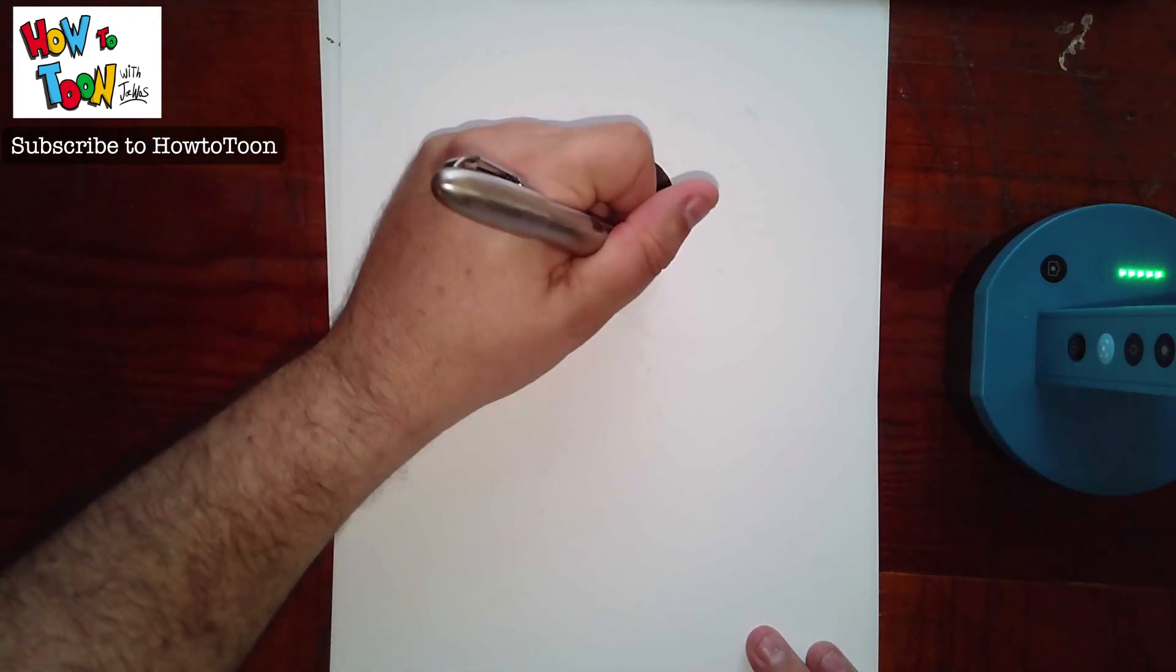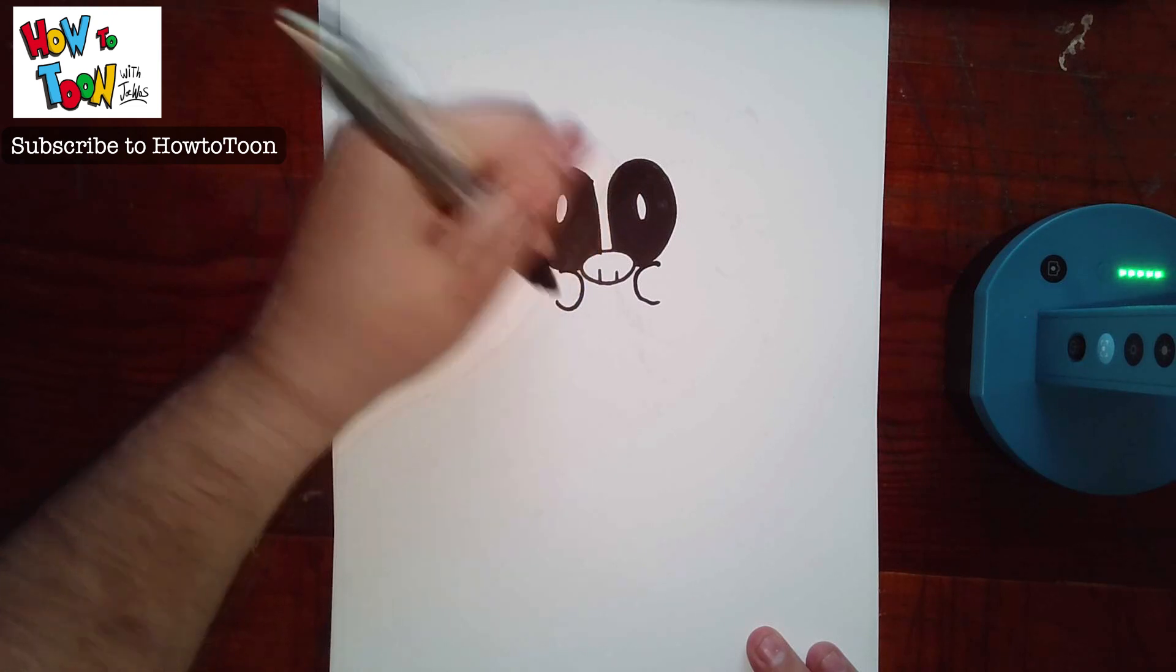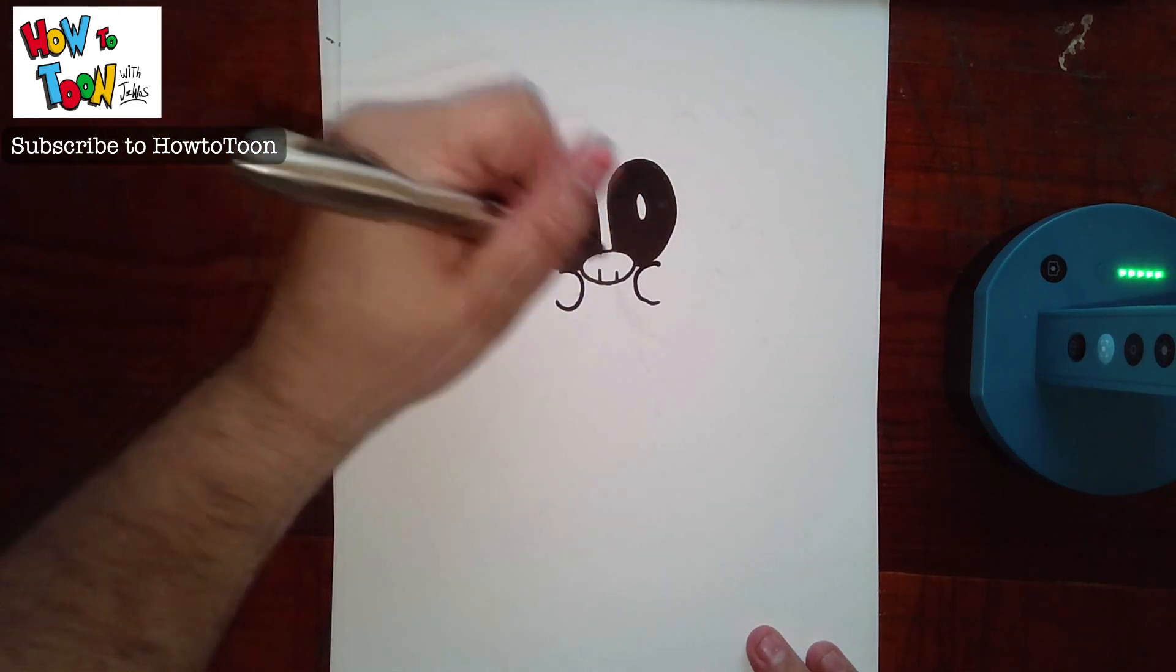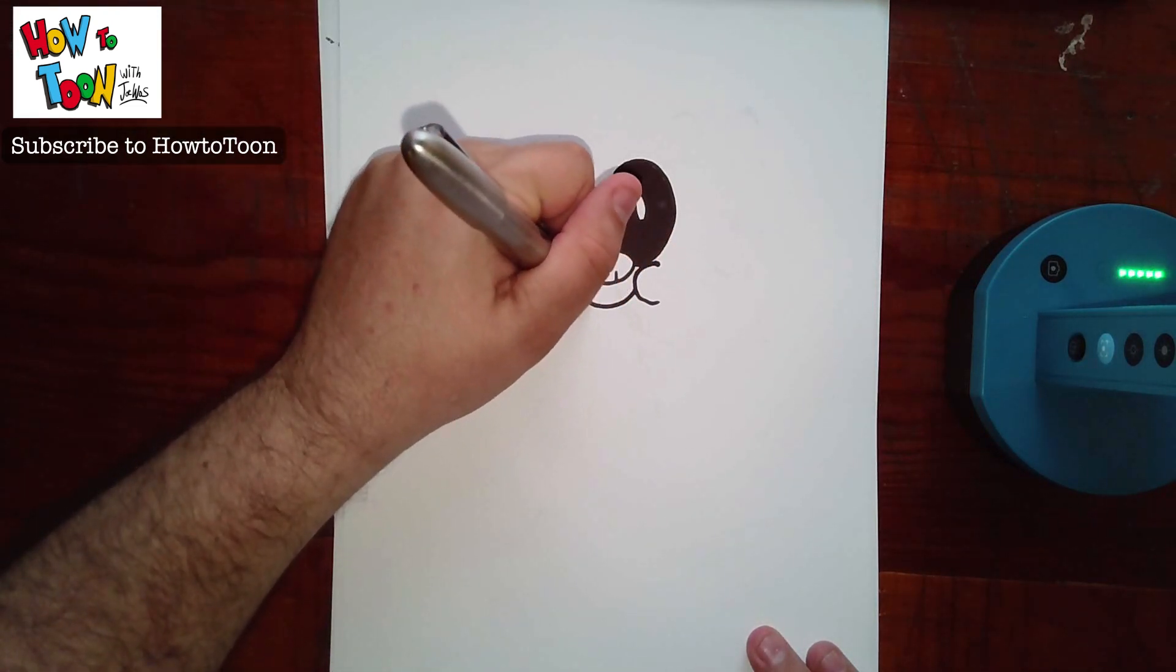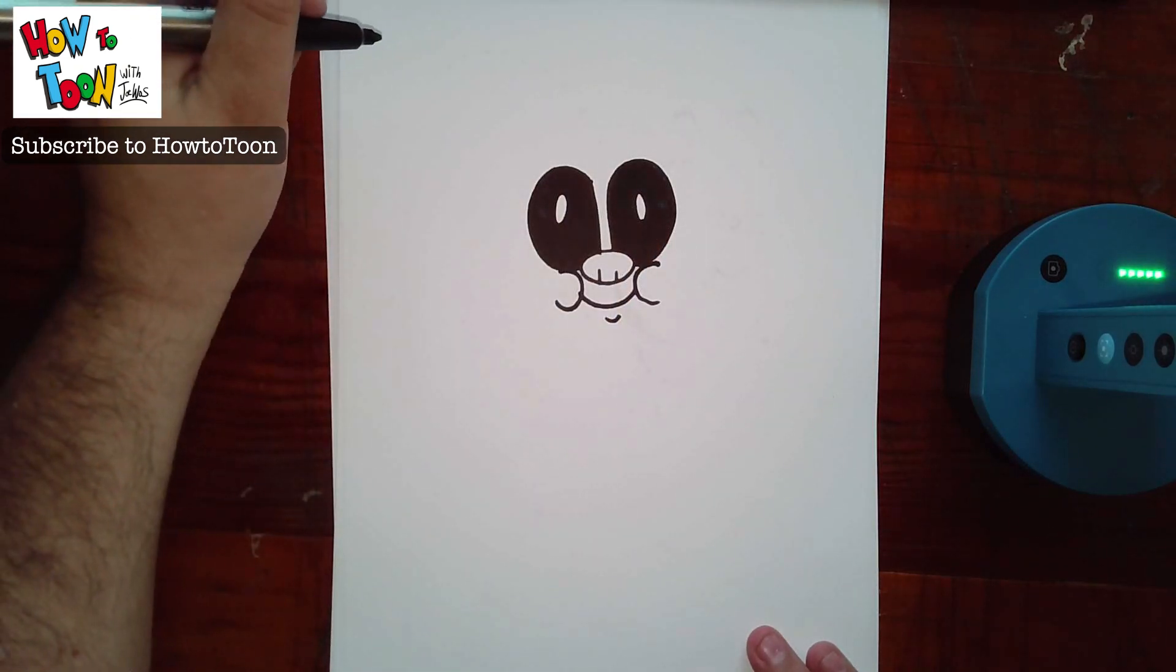Now, get a little chubby cheek here. It's a letter C. Letter C backwards. And then a line like this. And then a dash. Good. Looking good. Doing great.